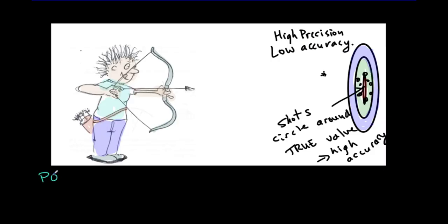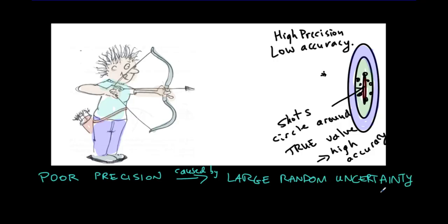So whenever we have poor precision, that's going to be caused, always caused, by large random uncertainty. So you take exactly the same measurement many times, and you're getting values that are all over the place. So there's a random aspect to the values that you're getting from your measurements.